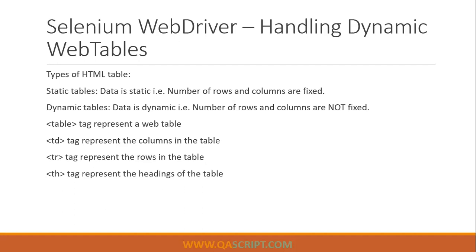There are particularly few tags which are used in web tables. Generally when you have a web table, that element will have a table tag. If you have rows and columns, columns are represented by td and rows are represented by tr. Similarly, the headings of the table are represented by th. When you are trying to identify your web table or rows and columns, these tags could be handy. You can use tag name by dot tagName and then manipulate and find your respective rows and columns.